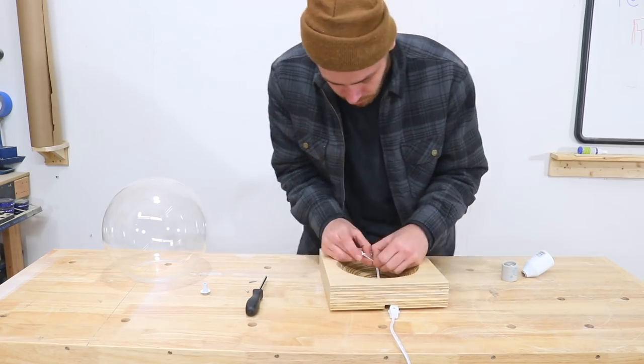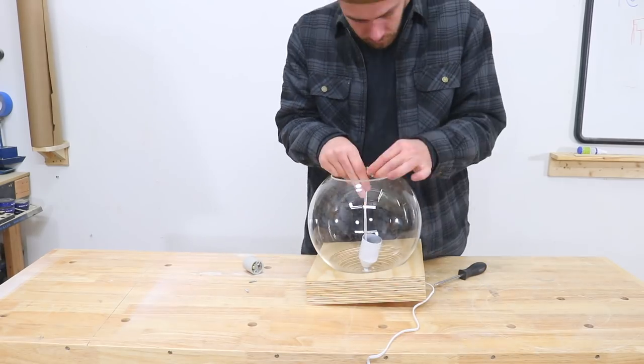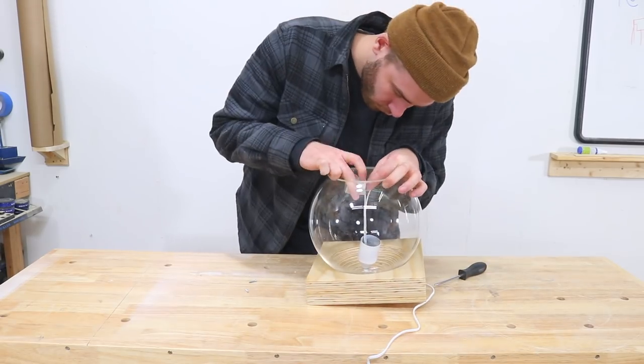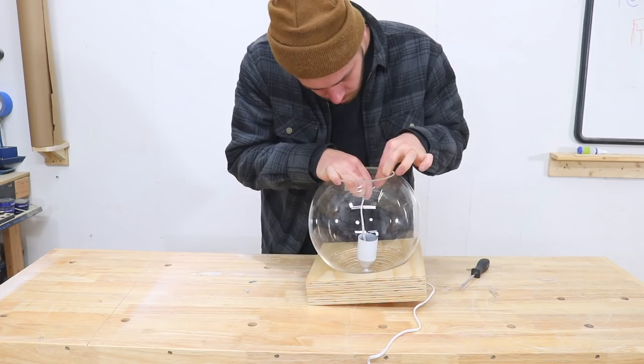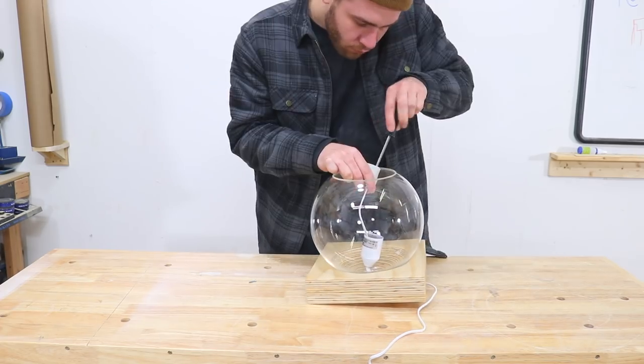First you're gonna feed the wire through the base then the threaded rod over that wire. Then you can put the globe on and the socket cover. Once you have the backing plate and the washer for the back of the socket in you can screw in the wire to each of the terminals and attach that backing plate.